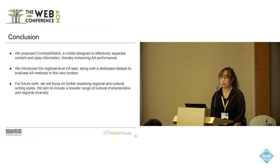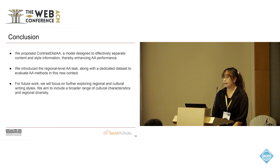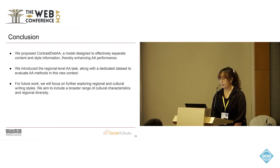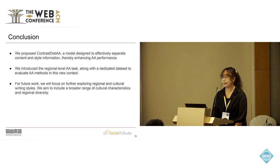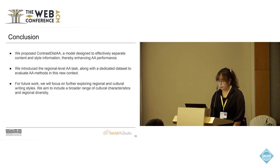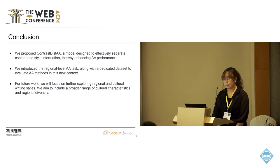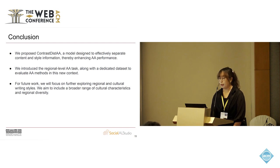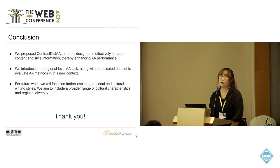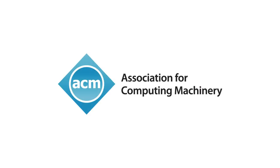In conclusion, we proposed the new contrastive disentanglement method to effectively separate content and style information, improving authorship attribution performance. We also collected a new dataset for regional level authorship attribution to fill this gap. For future work, we aim to explore a broader range of regional and cultural writing styles, since currently we only include six locations all in Southeast Asia. Thank you all for your attention — I'm happy to take questions.